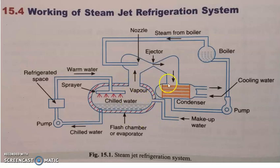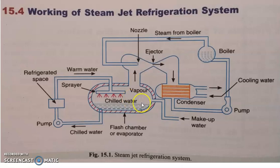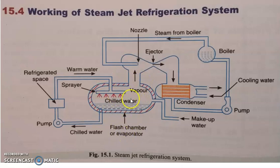The main working principle of this steam jet refrigeration system is: suppose we are decreasing the pressure on a surface of a liquid, then that liquid will be experiencing more evaporation of liquid molecules from that liquid surface. So that we already experienced in nature. Suppose we are having any liquid surface like this. Here you can see there is a flash chamber or evaporator, which is a very large vessel containing some